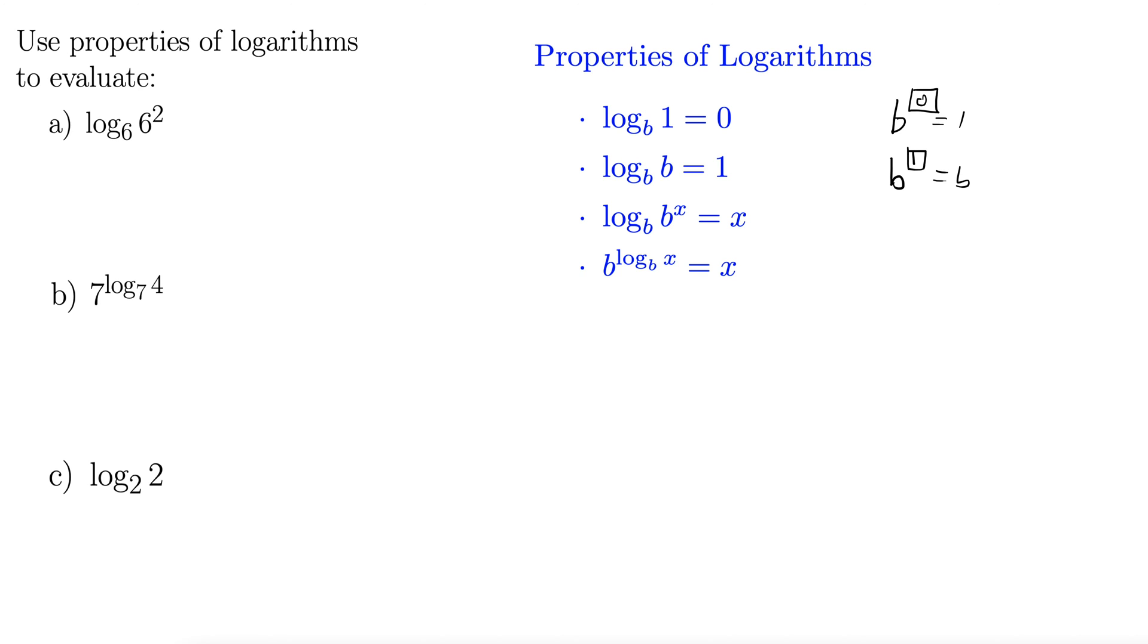Similar thing for the third property. Log base b of b to the x equals x. So that's like asking b to what power gives us b to the x? Well, b to the x gives us b to the x, so the answer here must be x, which indeed it is.